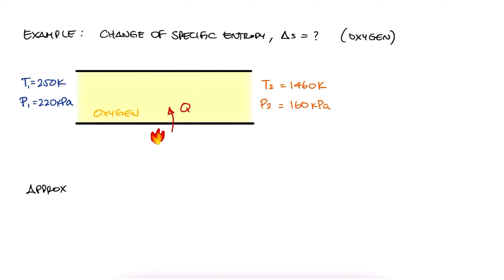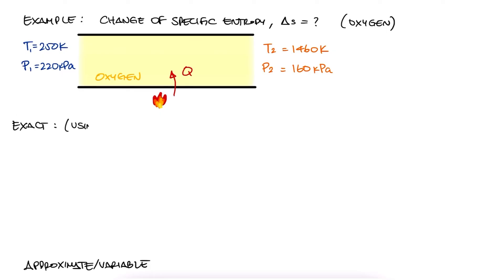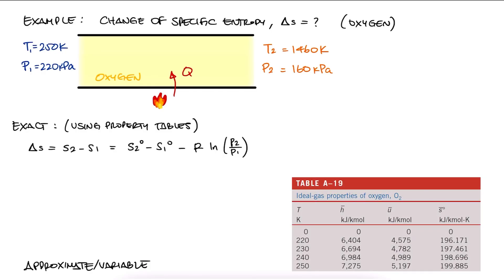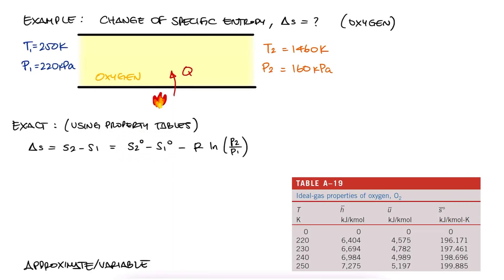We know we can do this with two different approaches, approximate or variable, and exact. So let's begin with the exact analysis and use the values from the property tables. We know that the change in specific entropy S2 minus S1 will be equal to the difference in specific reference entropy minus R natural log of P2 over P1. When we go to the tables to get reference S2 and S1, we see that for oxygen,